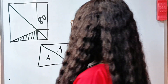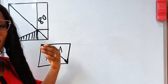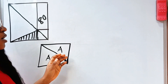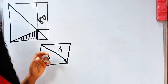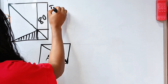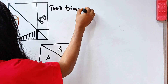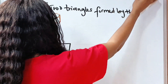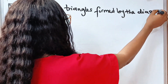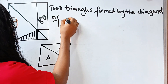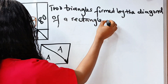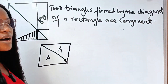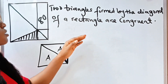Some of you mentioned that you don't fully understand my accent, so permit me to write what I said, because this is the main thing we are going to use to find the value of the shaded portion. What I wrote is: the two triangles formed by the diagonal of a rectangle are congruent.